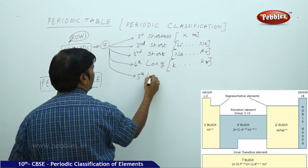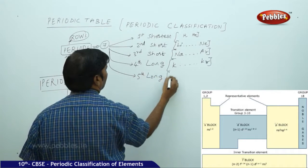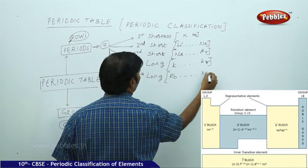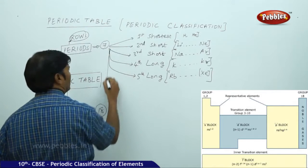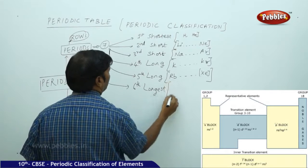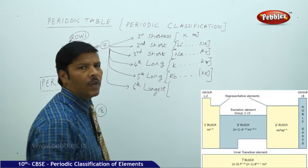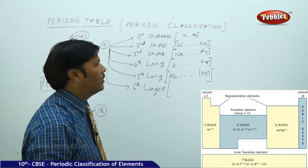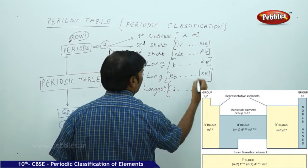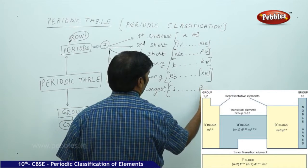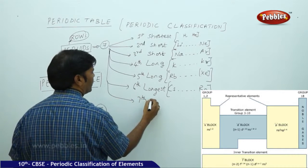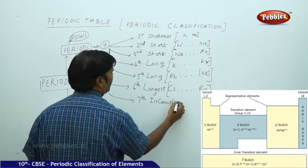The fifth is again a long period, starting with rubidium and ending with xenon. The sixth is the longest period, starting with cesium and ending with radon. The seventh period is incomplete, starting with francium.